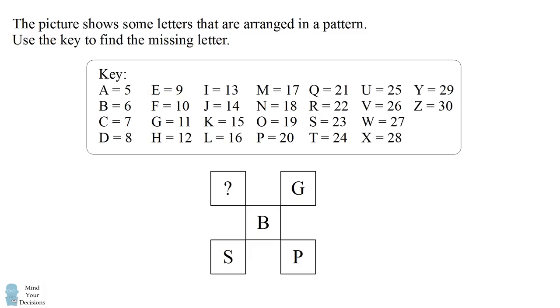The picture is a 3 by 3 grid that only involves the four corner squares and the center square. In the first row, the two corner squares are question mark and G, the second row is the center square B, and the third row is the corner squares S and P.